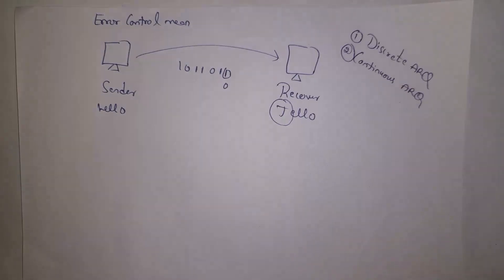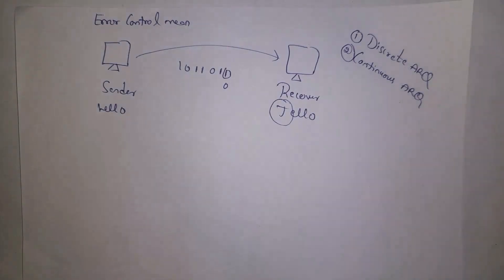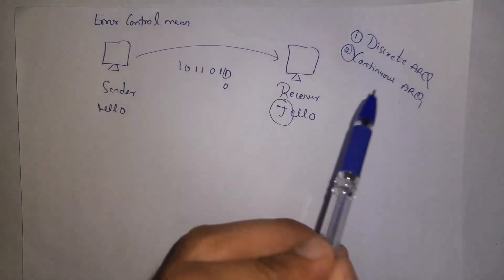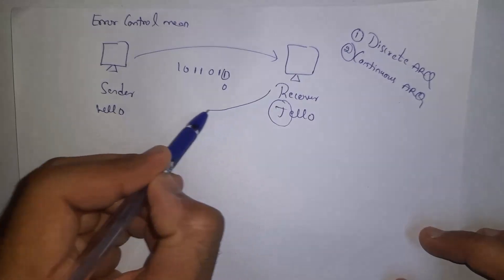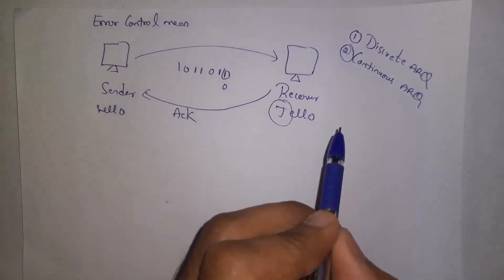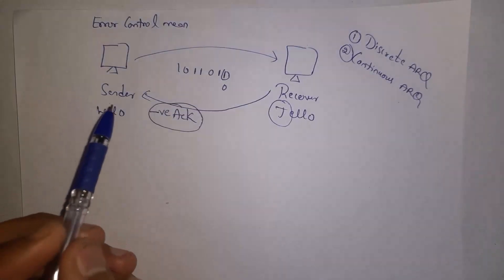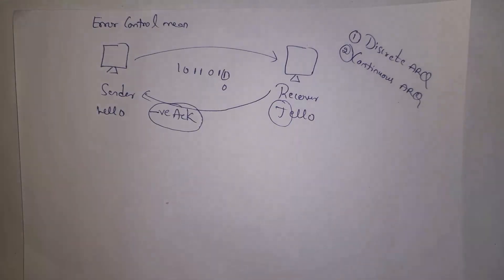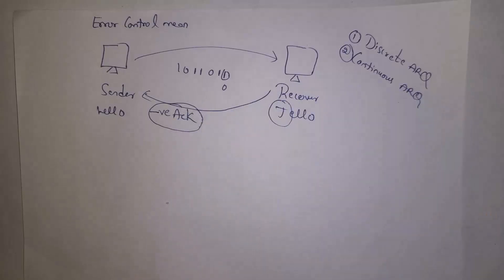ARQ methods are classified into two types: the first is Discrete ARQ and the second is Continuous ARQ. In Discrete ARQ, whenever the sender sends data to the receiver, the receiver gives a reply — called an acknowledgement — stating whether data was received correctly or not. If data is received correctly, the receiver gives a positive ACK; if there is an error, it gives a negative ACK, and the sender retransmits that same data again.